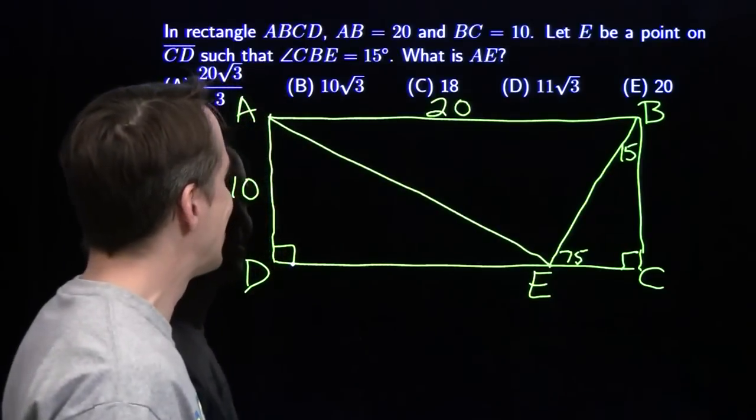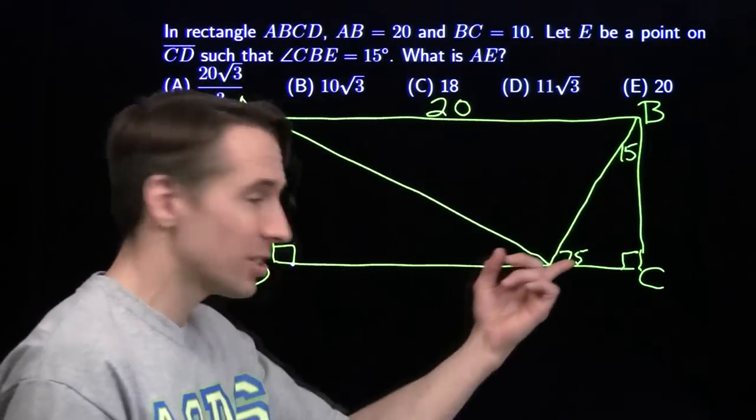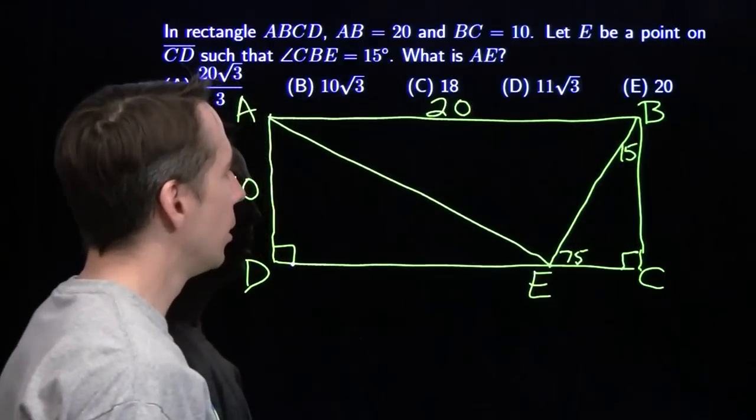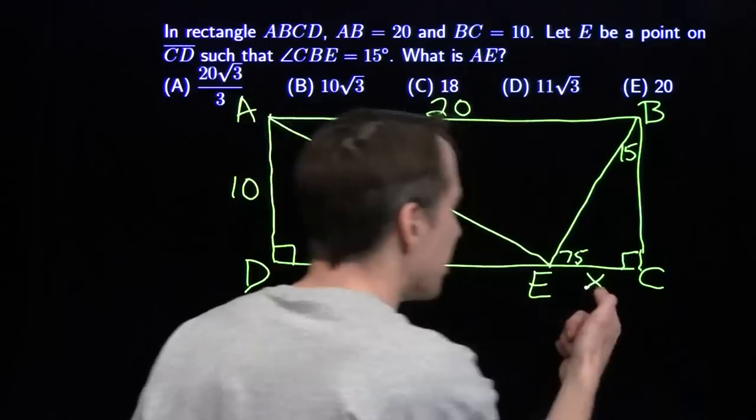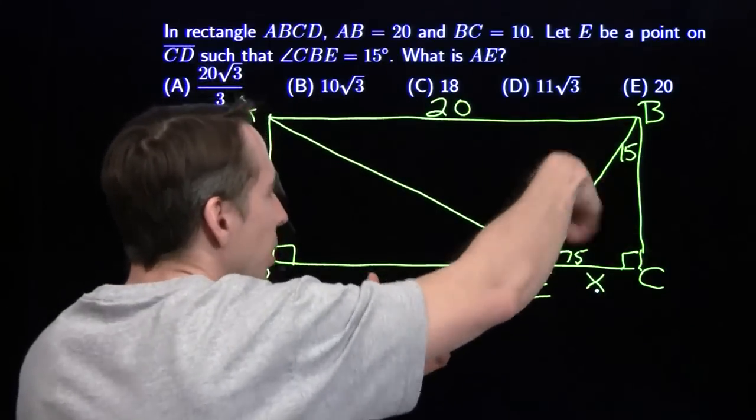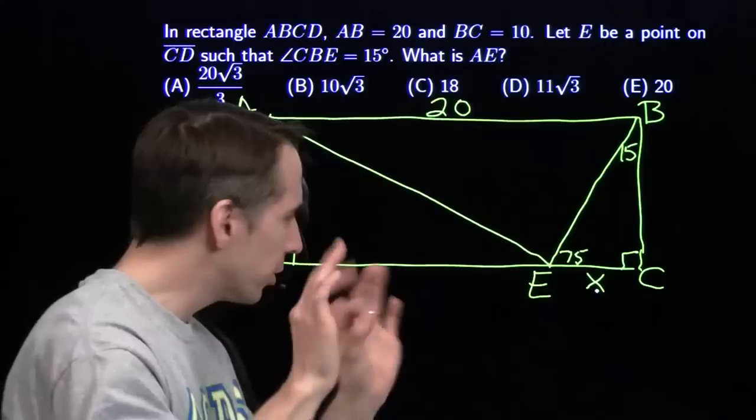We can find AE, but I don't know anything about this stuff over here. I do at least know this is 15 degrees, this is 75 degrees, and this side has length 10. So if I can figure this out, I'm going to put an X there. If I can figure this out from the information I have about this triangle over here, well, then I can just subtract it from 20. I get this, Pythagorean Theorem, and then we're all finished.